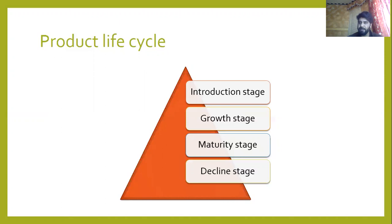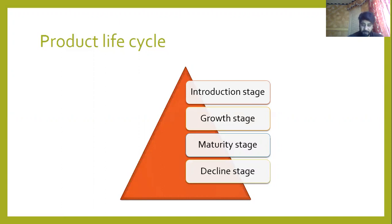At a declining rate means that people now want something new, so sales start to decrease. After that comes the Decline Stage. After every rise, there is a fall — at the end of the day, the product will be finished. So at the Decline Stage, we keep our strategy so that the product won't become obsolete in the market.